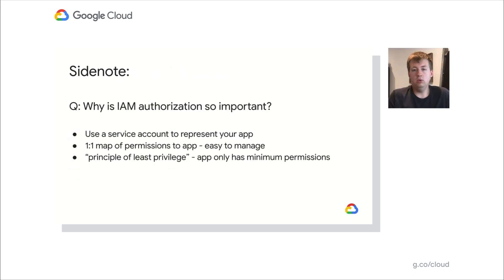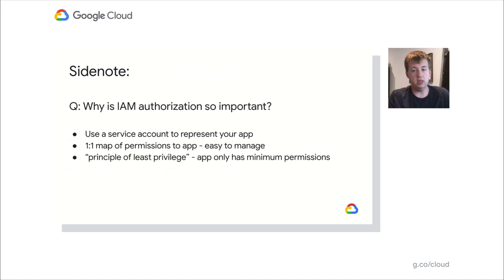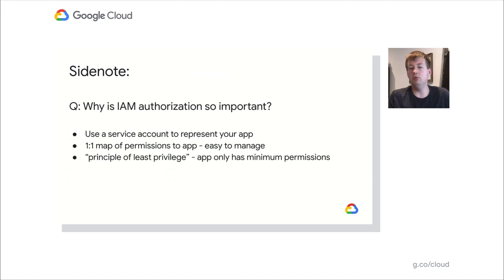Why is IAM so important — why do we push the proxy so hard? The reason is that you can use a service account to represent your entire application. It gives you a one-to-one mapping of permissions to applications, which makes it easy to manage. If you decide an application no longer needs to access a database, you can simply remove the permission and it no longer can, even if changes to the app are made. Finally, it follows the principle of least privilege — the app only has the minimum permissions that are needed, which is a great security advantage.